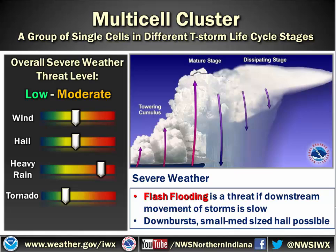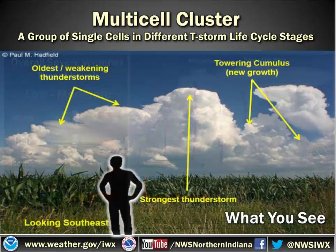Sometimes you can get brief spin-ups, but that's more likely once you get into the higher end of the spectrum for multi-cells. Generally speaking, the severe weather threat is low to moderate. When you're in the field, you'll see something like a group of single cells, all of them in different life cycle stages.